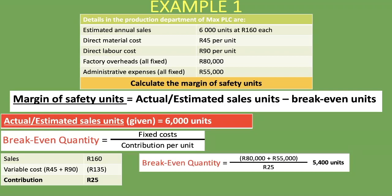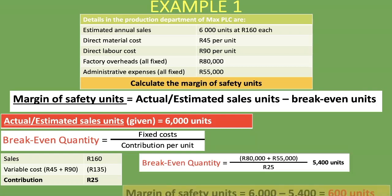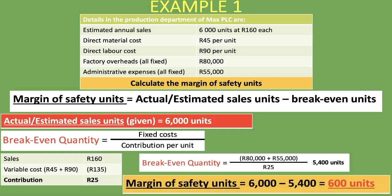Now that we have our actual estimated sales units and our break-even units, we can get our margin of safety units, which is 6,000 minus 5,400, giving us 600 units.